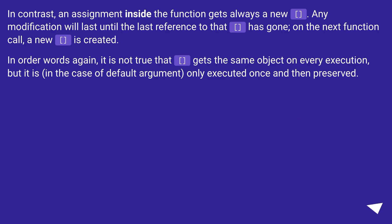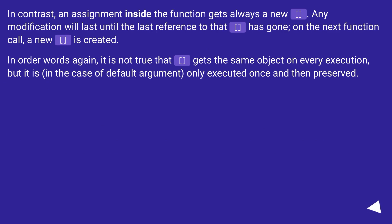In contrast, an assignment inside the function always gets a new object. Any modification will last until the last reference to that object has gone; on the next function call, a new object is created. In other words, it is not true that the default gets the same object on every execution — but it is, in the case of a default argument, only evaluated once and then preserved.